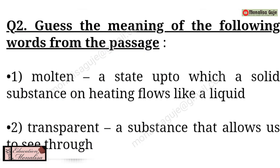Now let's go to the next question - Exercise number 2: Guess the meanings of the following words from the passage. First, molten - a state up to which a solid substance on heating flows like liquid. When the solid becomes liquid, it is called molten. Second is transparent - a substance that allows us to see through. You cannot see through a piece of wood, but you can see through a piece of glass; that is called transparent.